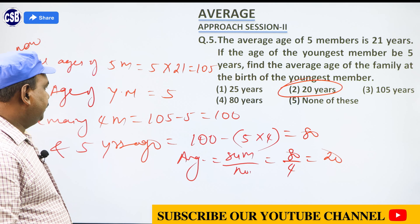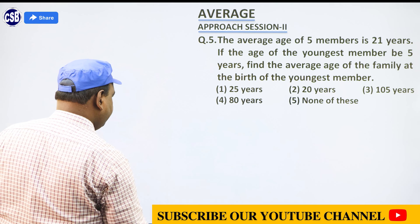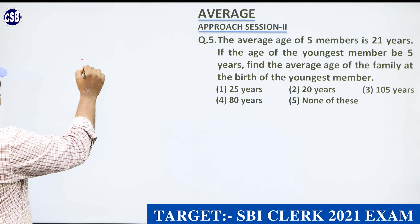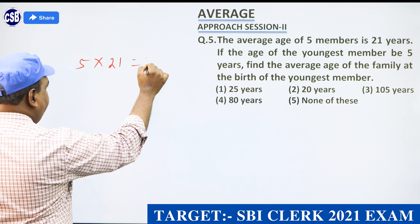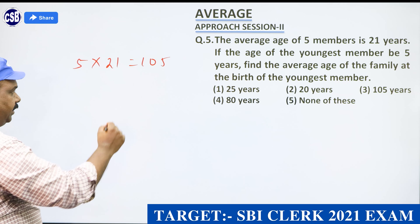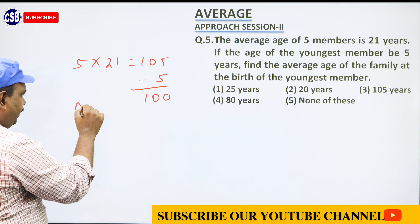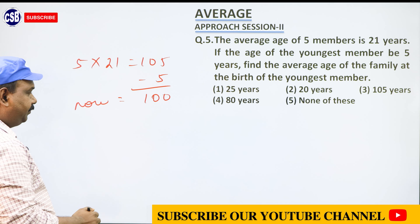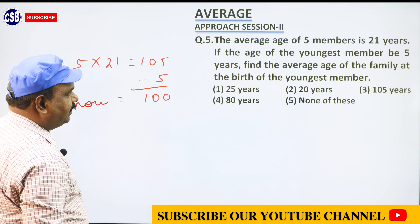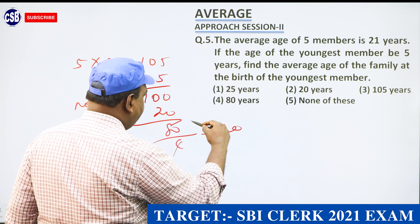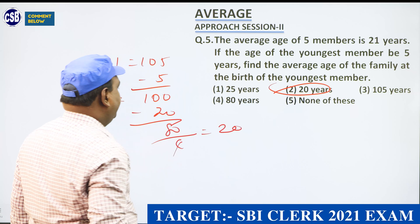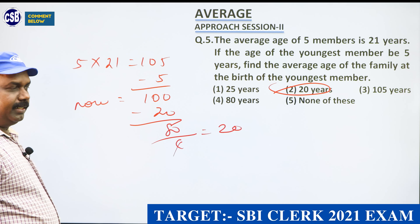To summarize the shortcut: 5 members, 5 into 21 equals 105. Remove the youngest member's age (5) to get 100 for 4 members. Five years ago, reduce by 20 (4 members times 5 years), so 80. Number of persons at birth of youngest member is 4. Answer: 80 divided by 4 equals 20.